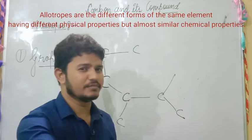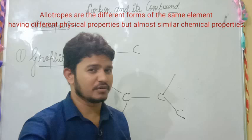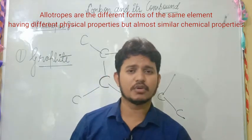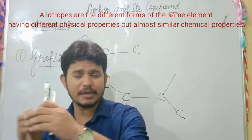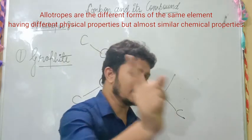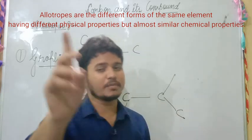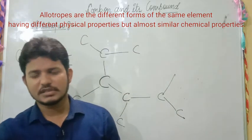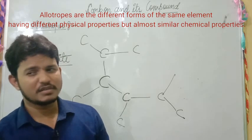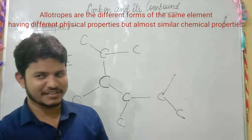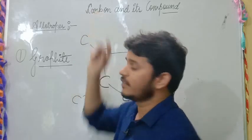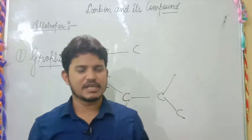Allotropes usheh kaathe hai, jinn ki physical property different ho, jinn ki arrangement alag-alag ho, jinn ki atoms different way mein arrange hain, lekin inka chemical property similar hoota hai. Toh, let's learn about carbon ke different forms.